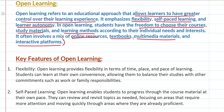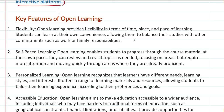What are the features of open learning? First, flexibility. In open learning, you have flexibility — you choose how long to study, at what time, and at what speed. Everything is in your hands. Students can learn according to their convenience, balance their studies, and also handle family responsibilities and work if they are working.